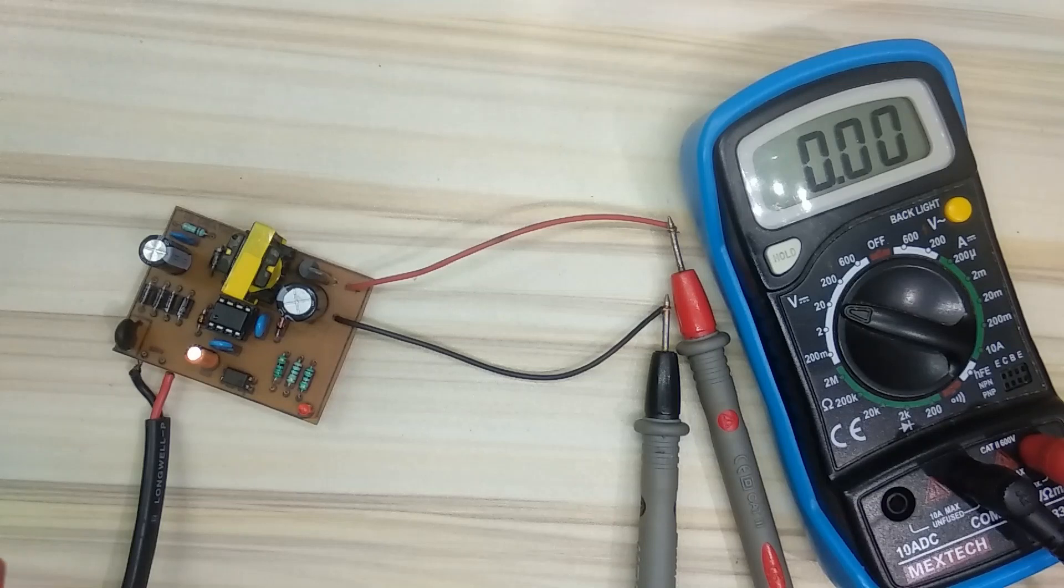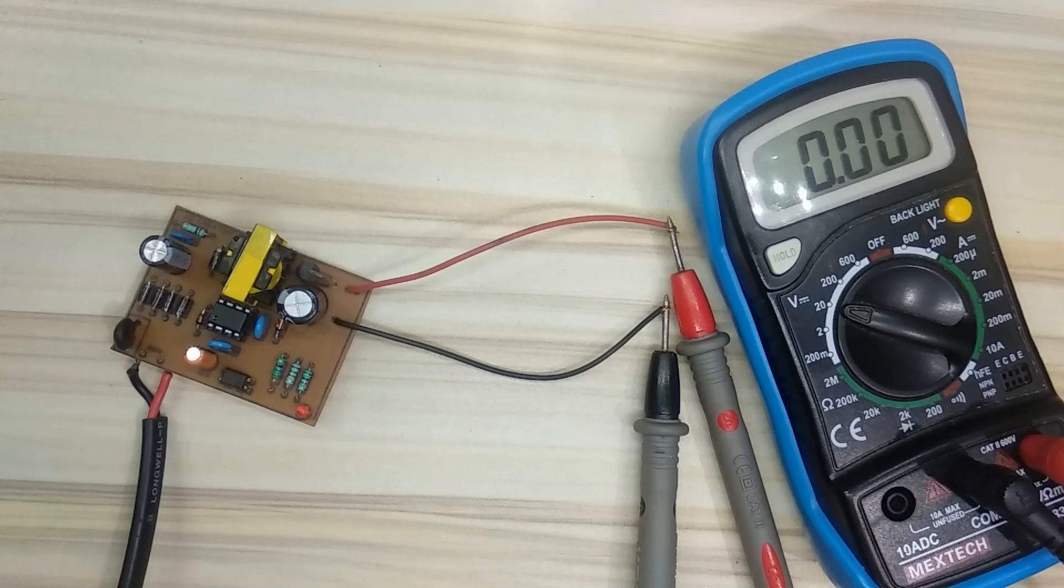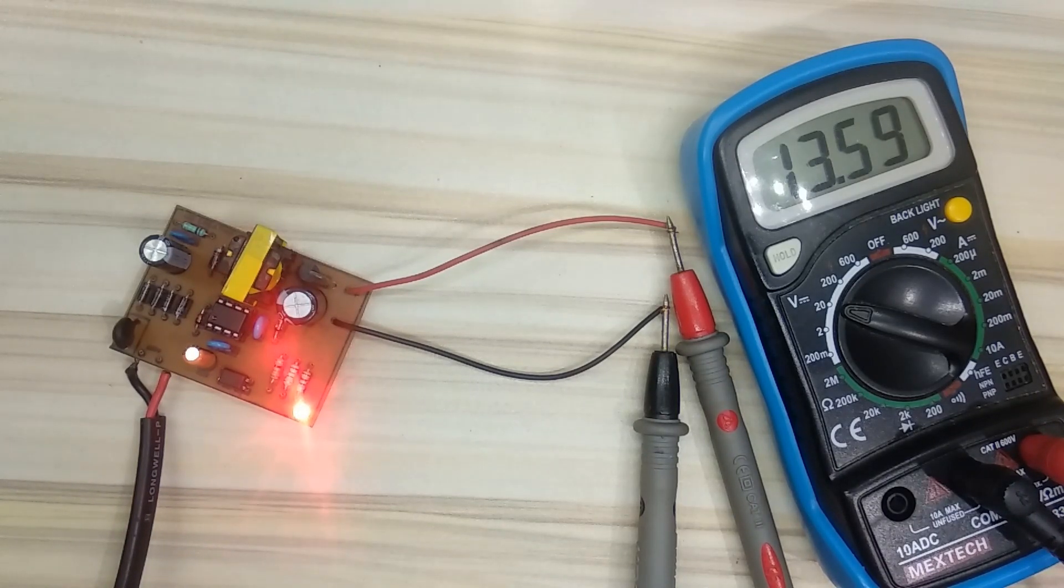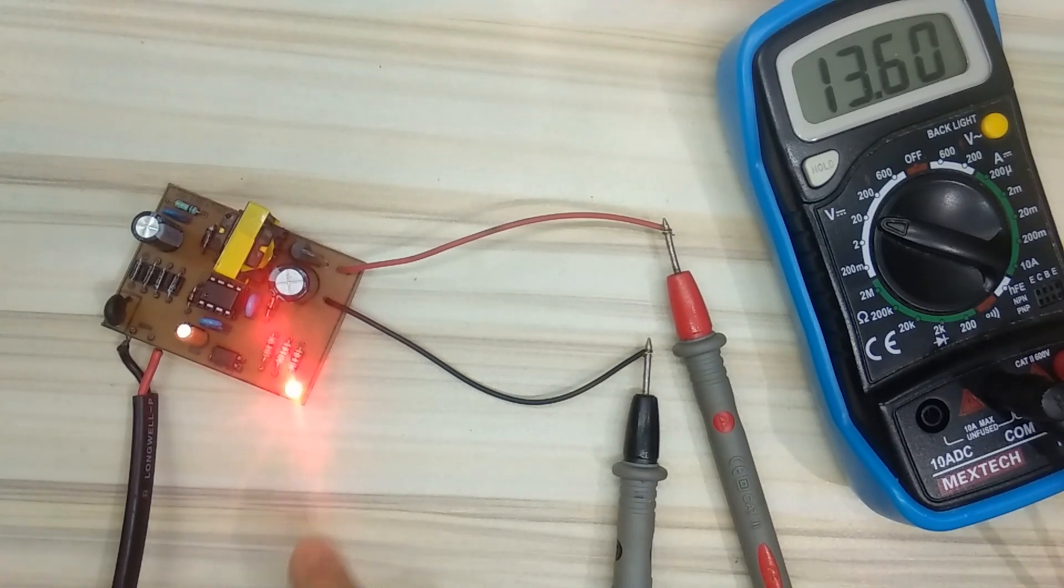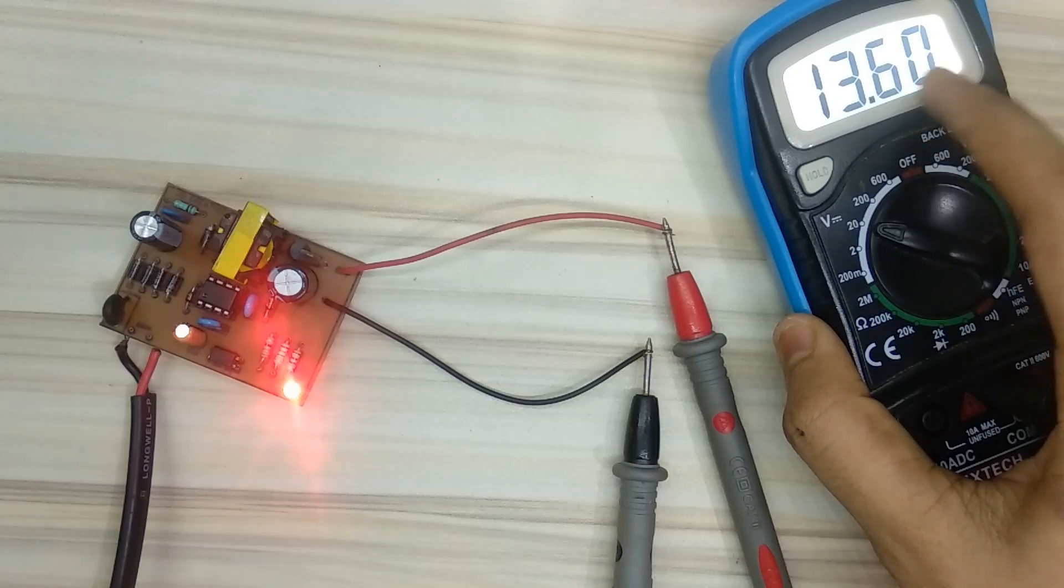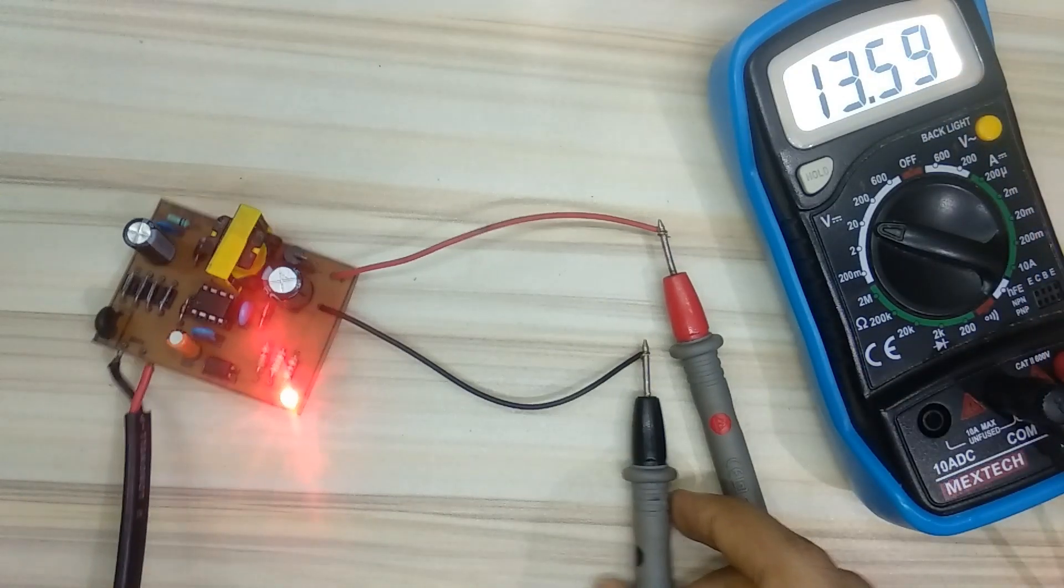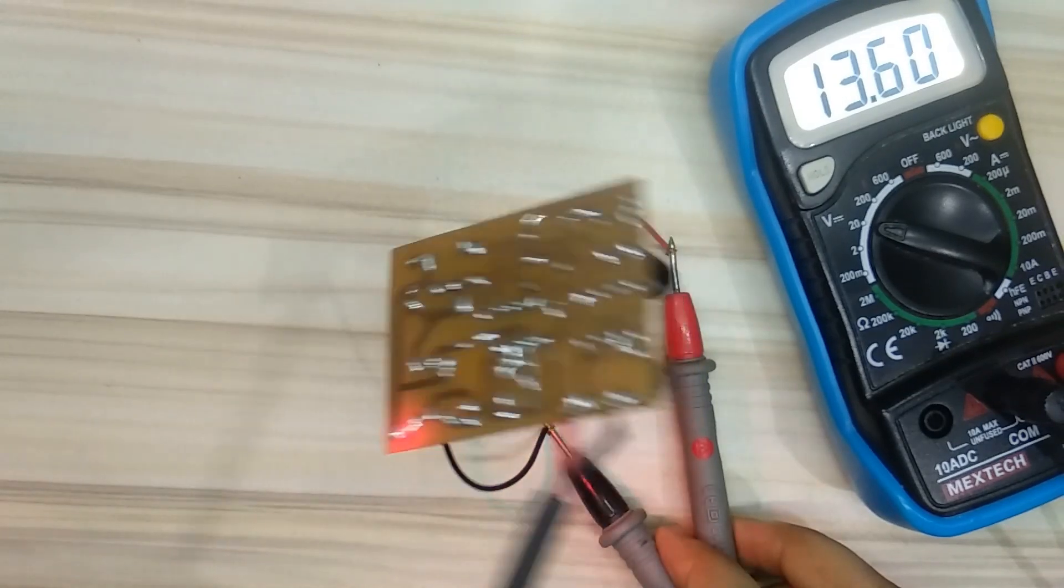So now let's power the circuit. As you can see the output LED is on and the output voltage is 13.6 volts. So it means our circuit is properly working.